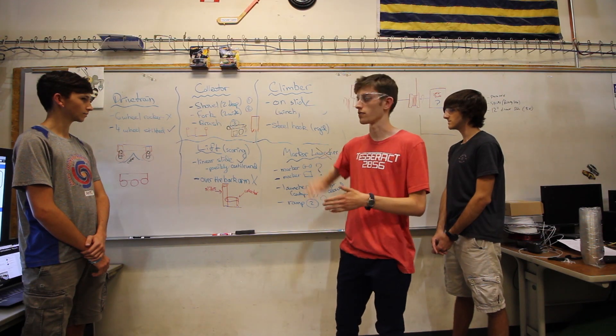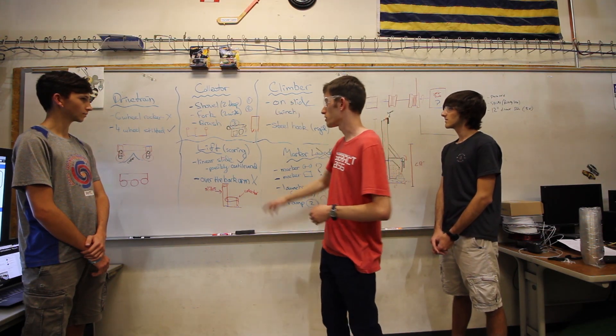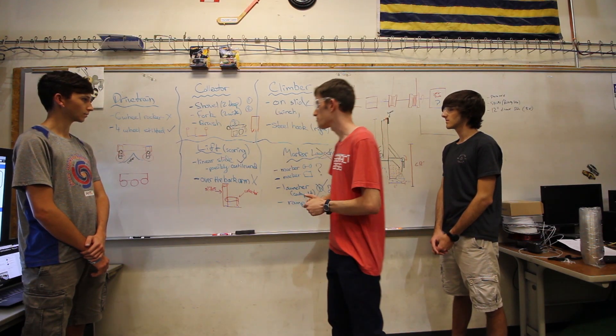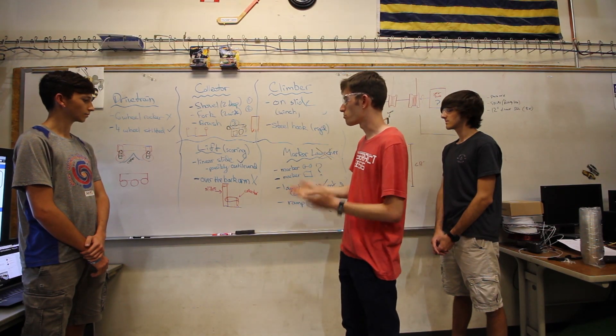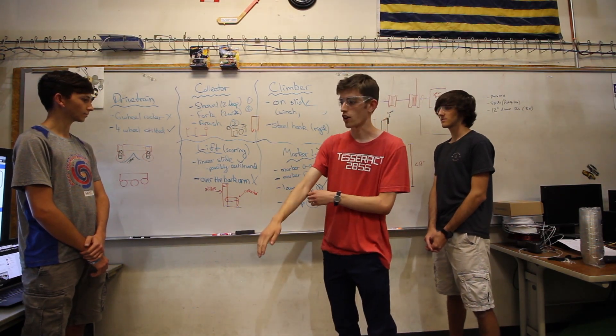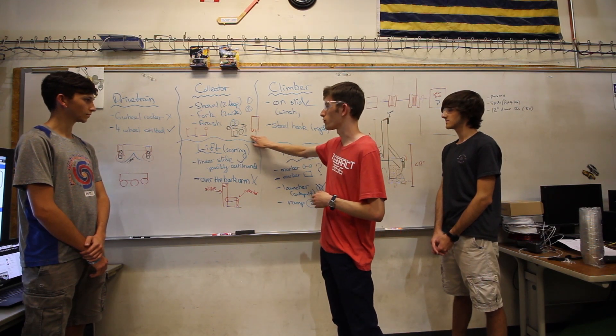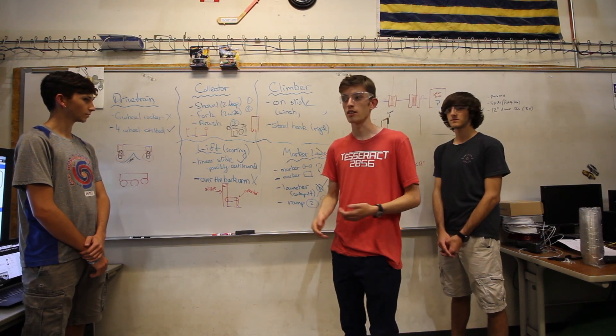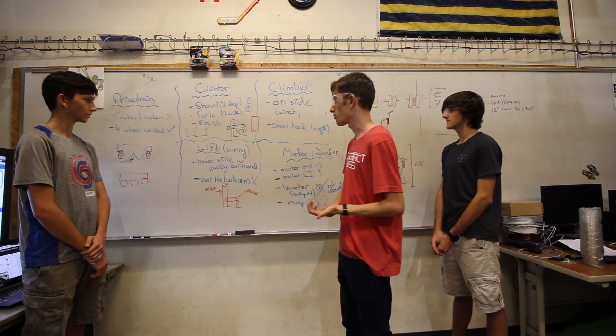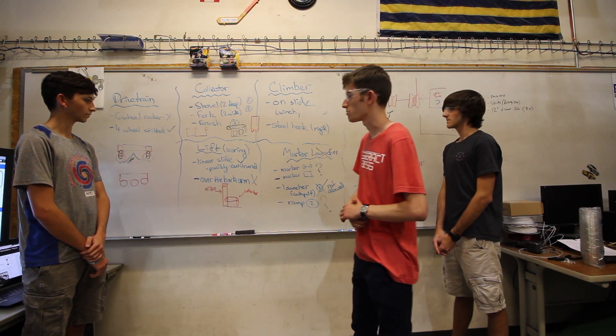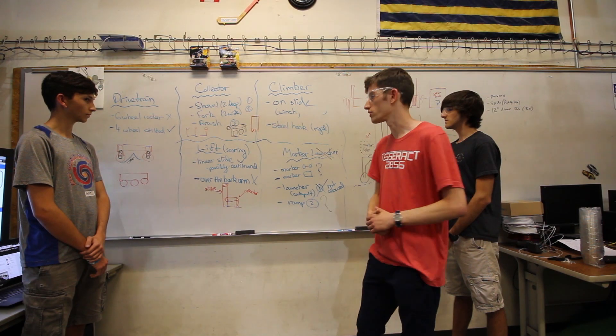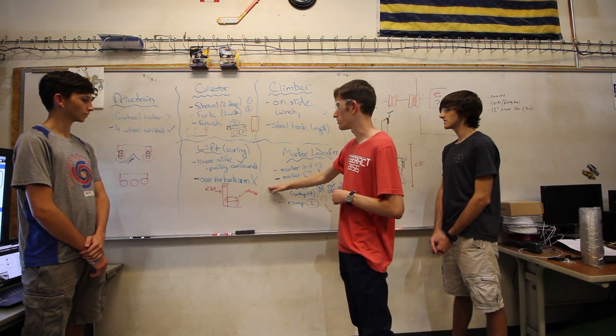We knew we needed a lift to get the collector up and down, so we decided to use a linear slide mechanism. Originally we were brainstorming an over-the-back arm where the arm would flip around to the back of the robot, but that added complications for depositing game elements with our collector upside down. We ultimately decided the linear slide would be easier to execute and it's something we have experience with.